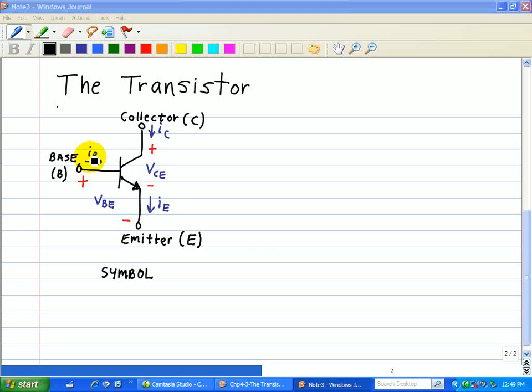We have three currents going into this transistor: IB the base current, IC the collector current, and IE the emitter current. Applying KCL to the BJT yields that IE is equal to the base current plus the collector current IC. This means that only two of the three currents can independently be specified. However, we normally work with IB and IC, and then use the KCL to find IE when needed.